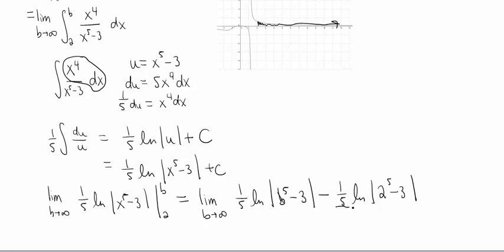Okay, the second piece here is obviously just some number, right? It's going to be whatever 1/5 natural log of, what is that, 29 is going to be. So this is just some number, okay, so that piece obviously converges.